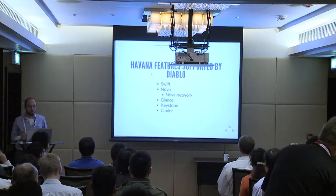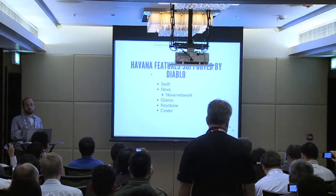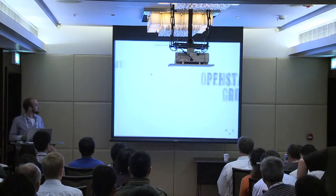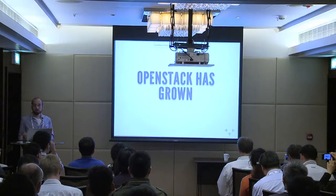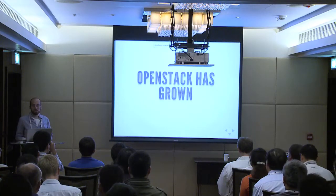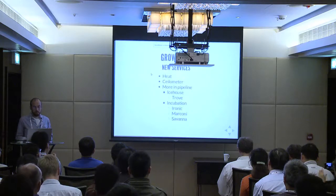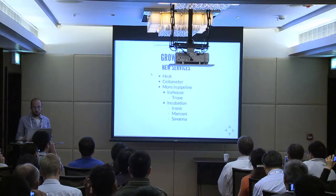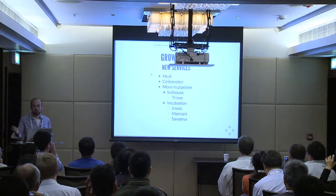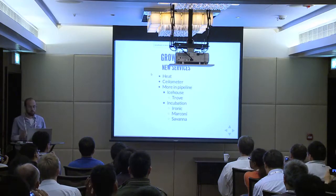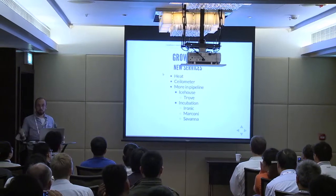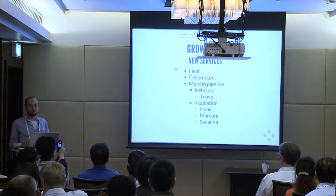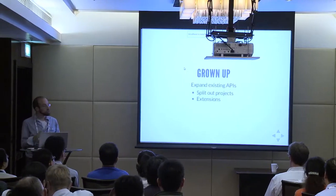Looking back, we get to that same original list as before — that's what we'll focus on for Diablo versus Havana. OpenStack has grown huge numbers with lots of new services: Heat, Ceilometer, Trove coming in Icehouse, and Ironic, Marconi, and Savannah in incubation. We're growing the project out in many ways, doing more things. But it's also been growing up — each project is actually getting richer.